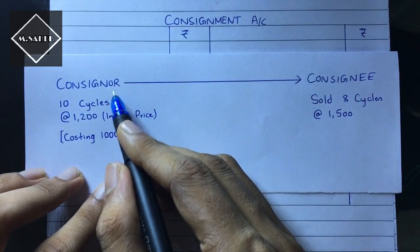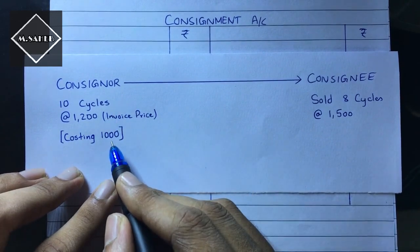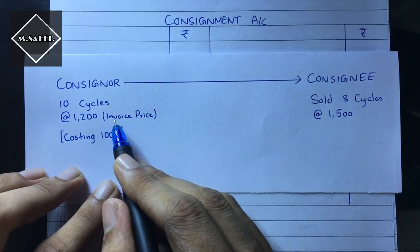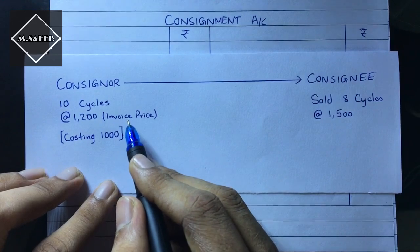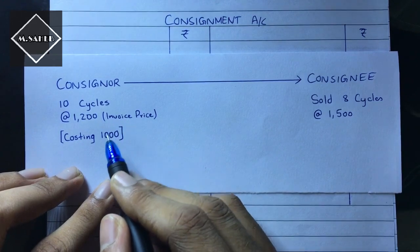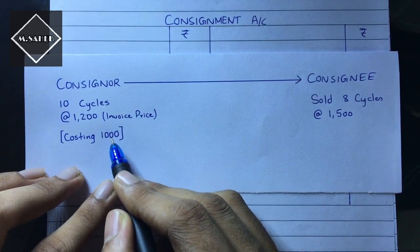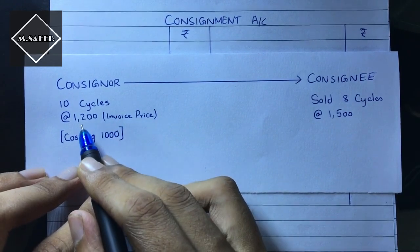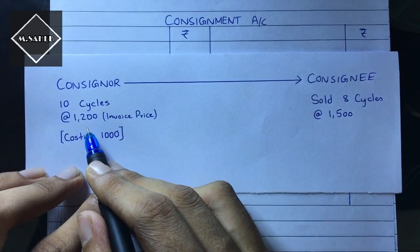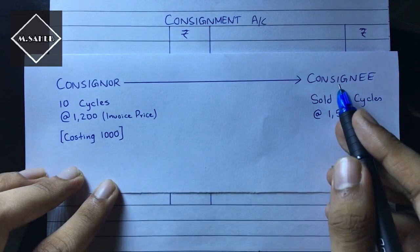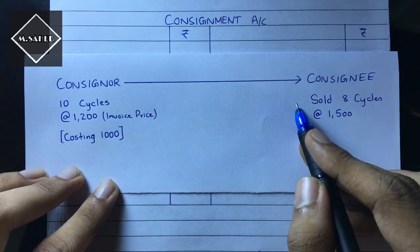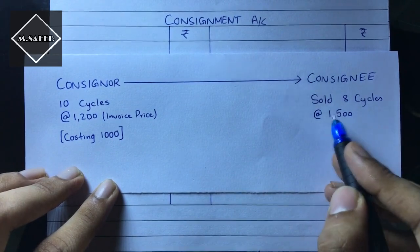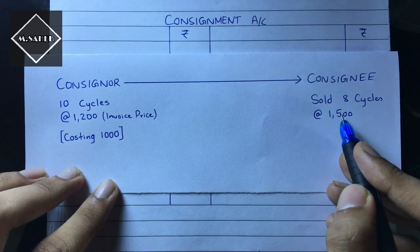In this example, the consignor has sent 10 cycles costing 1000 rupees each but invoiced at 1200. The cost of each cycle is 1000 but the invoice price is 1200. The consignee has received all the cycles and sold only 8 cycles at the price of 1500.